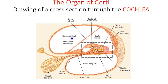The scala vestibuli and scala tympani, which are continuous with each other, are filled with perilymph, which closely resembles cerebrospinal fluid. The fluid in the membranous labyrinth, including the scala media, is endolymph, which is very different from perilymph. Endolymph contains a high concentration of potassium — about 145 milliequivalents per litre — with low sodium of about 2 milliequivalents per litre. In this respect, it resembles intracellular fluid.